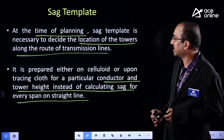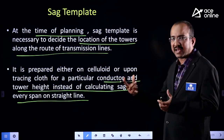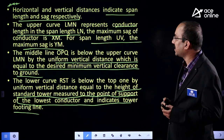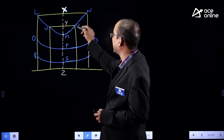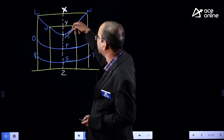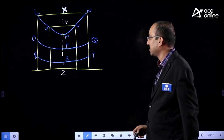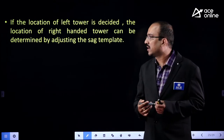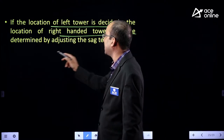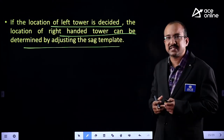This is about the sag template. It is mainly useful for the location of towers while installing transmission lines. If you know the location of the left tower, the right-side tower location can be determined by adjusting the sag template.